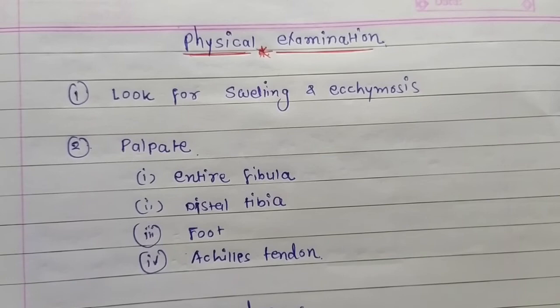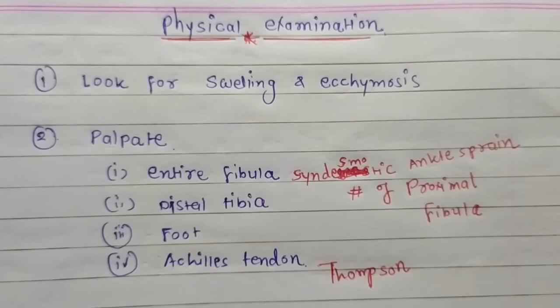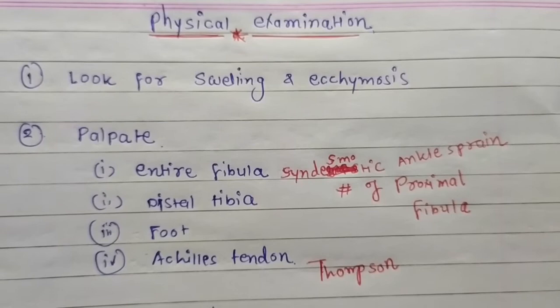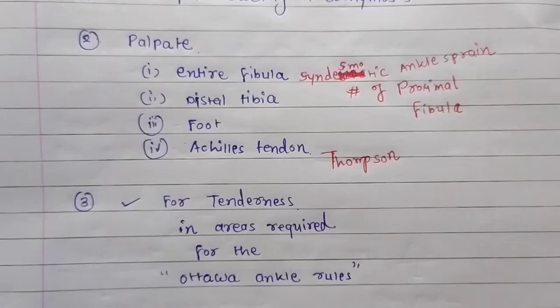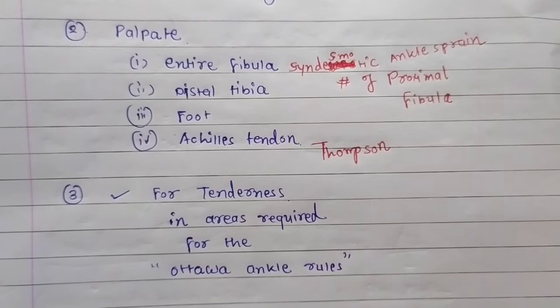The entire fibula is palpated because syndesmotic ankle sprain is associated with fracture of the proximal fibula. In case of tenderness on palpating the Achilles tendon, the Thompson test should be performed. Third, check for tenderness in areas required for the Ottawa ankle rules.